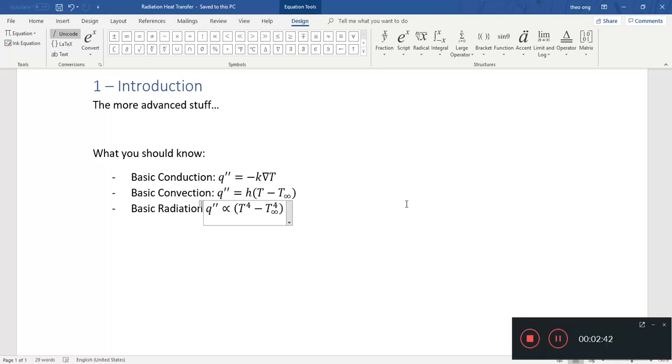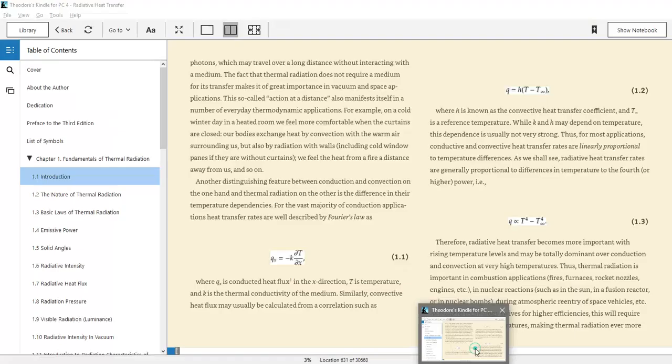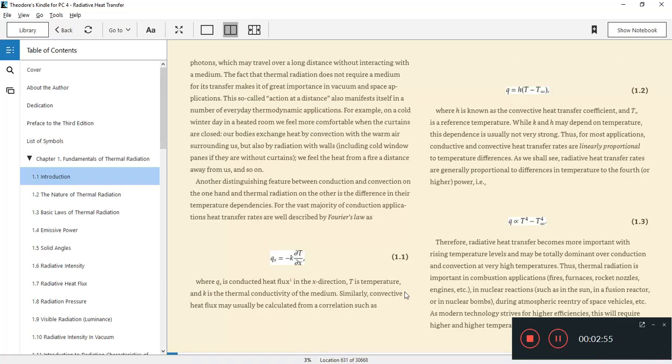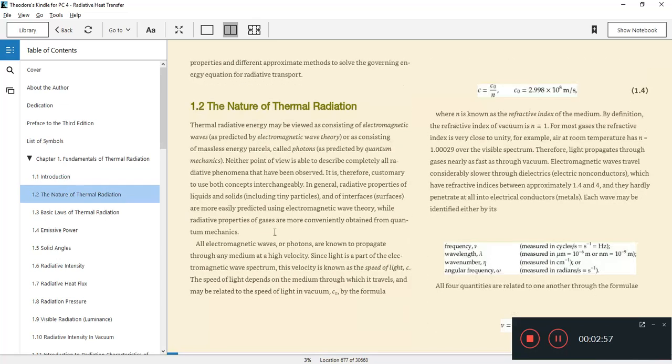Radiation heat transfer is proportional to the temperature to the power of 4 between the black body and the environment. We'll start from there, assuming you have some basic undergraduate heat transfer knowledge. Without further ado, let's take a look at where to start.